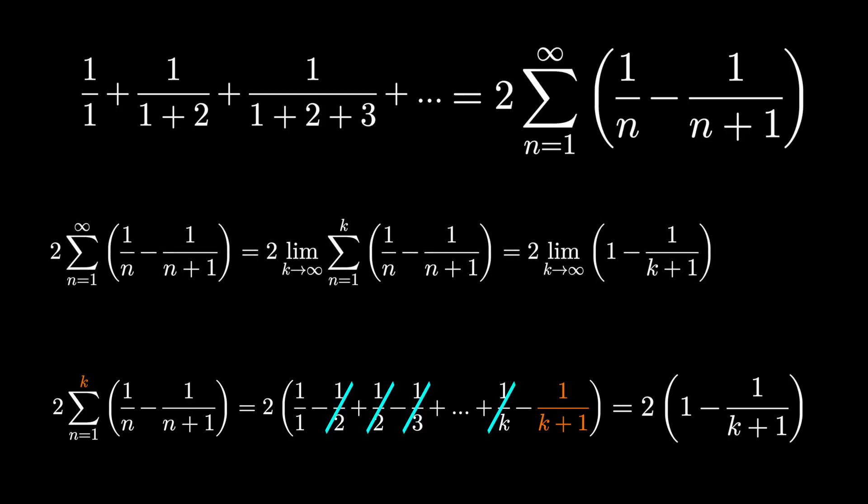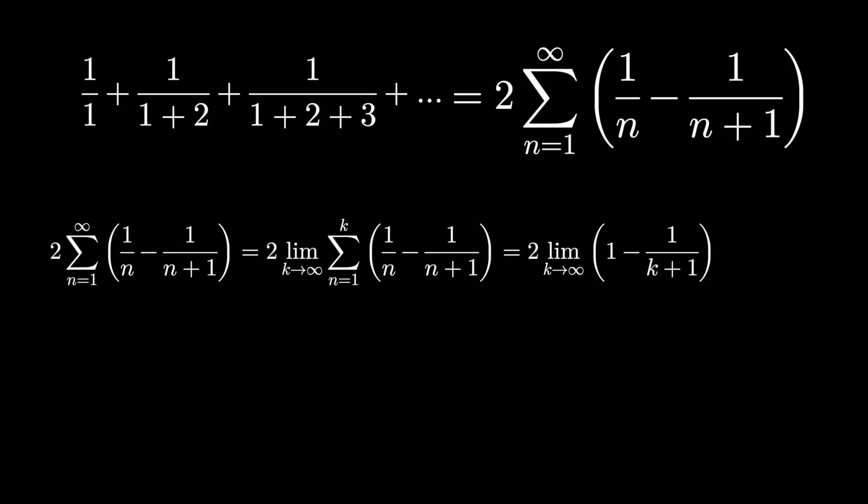Fortunately, if we take the limit as k goes to infinity, that piece disappears. We just get 2 times 1, or 2.